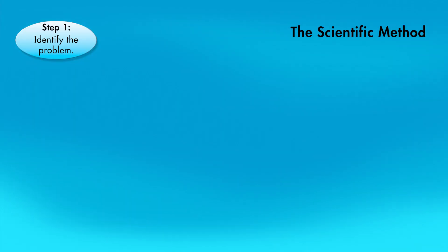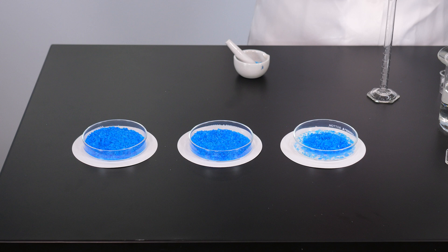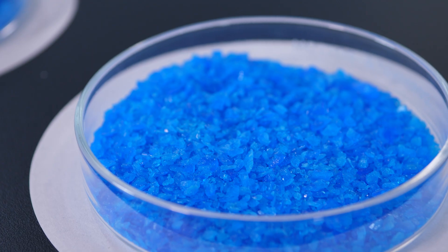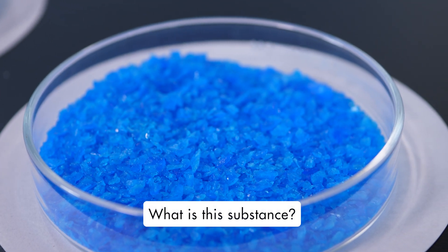Let's use the scientific method to help us identify an unknown substance. The first step in the scientific method is, identify the problem. To use the scientific method, we must first recognize a problem exists, and then state the problem in clear and concise terms. Asking a question helps us focus on the purpose of our investigation. In this case, the problem is the fact that we do not know the identity of this substance. The obvious question is, what is this substance?